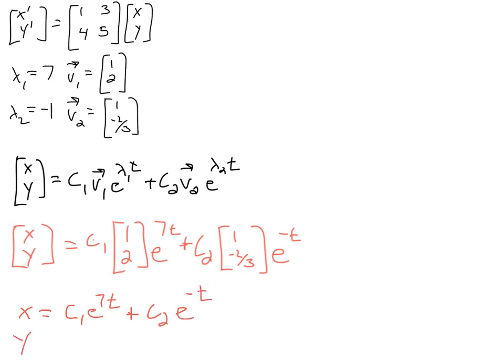and the solution for y is therefore y = 2c₁e^(7t) - (2/3)c₂e^(-t). So this is how we've been writing out our solutions, but it's consistent with what we get when we write this out in vector form.